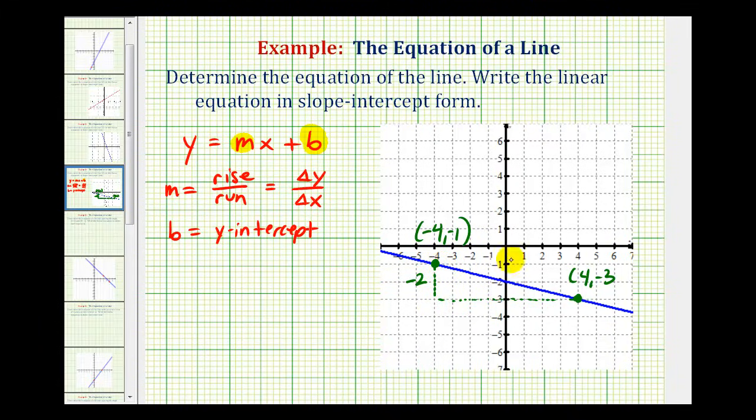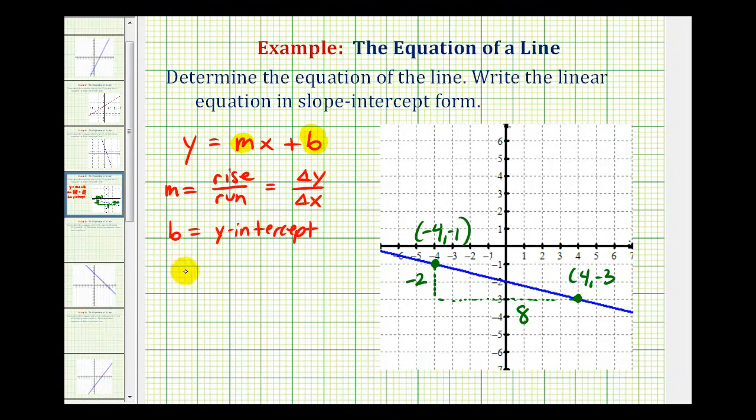The horizontal change is positive eight because we move right eight units. So this means the slope of our line is negative two-eighths, which simplifies to negative one-fourth.